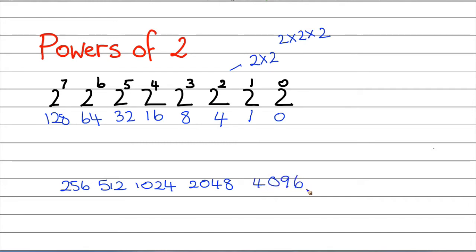In subnetting, this is the basic maths that you need — being able to work out powers of 2 and then basic addition, subtraction, multiplication, and division. This, in effect, is your byte. Those are the byte positions and these are the values of a byte.